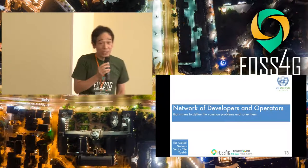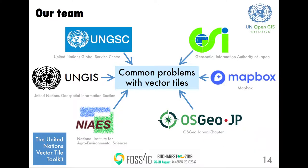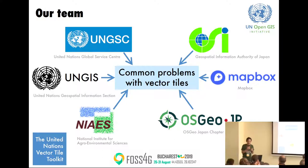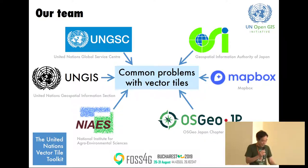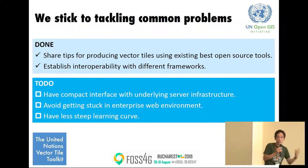I would like to talk about the network of developers and operators. As of now, we are a team of developers and service operators from the United Nations, National Mapping Agency, OSGeo Japan, and the National Research Institute for Agriculture. From August, one engineer from Mapbox joined this voluntary initiative. We are a very diverse team, and we are sticking to tackling common problems because we want to make this an open source project.